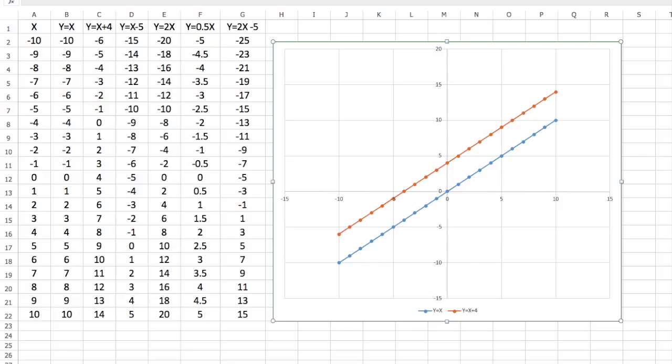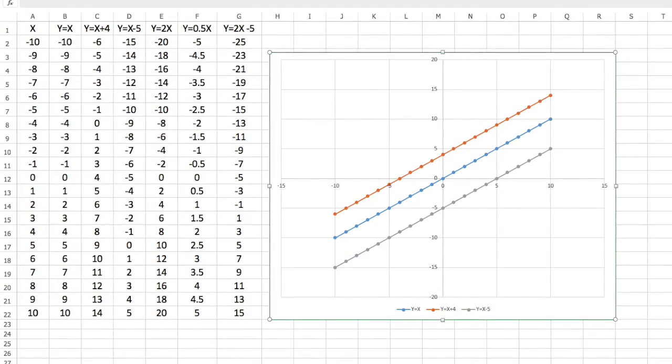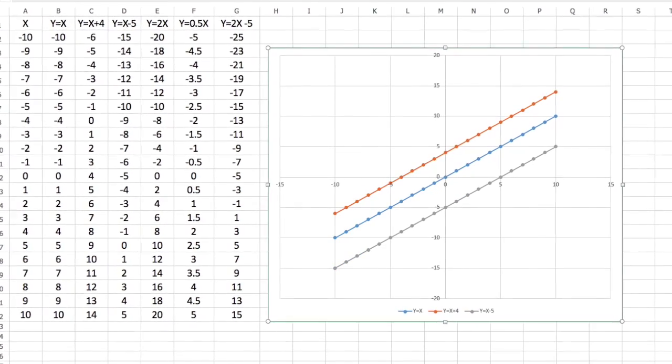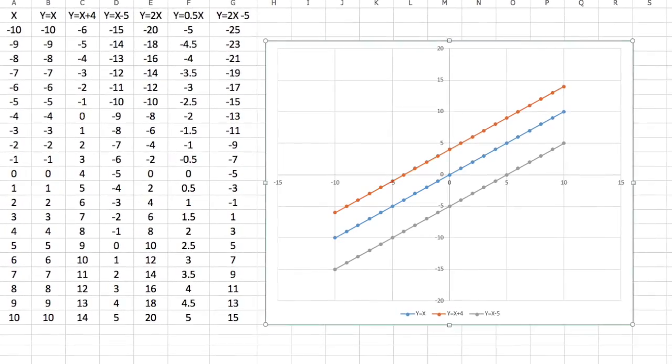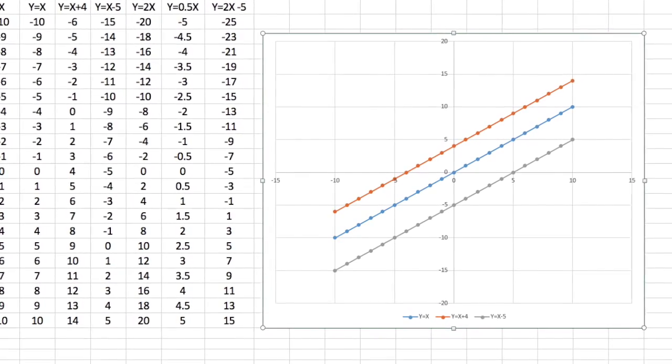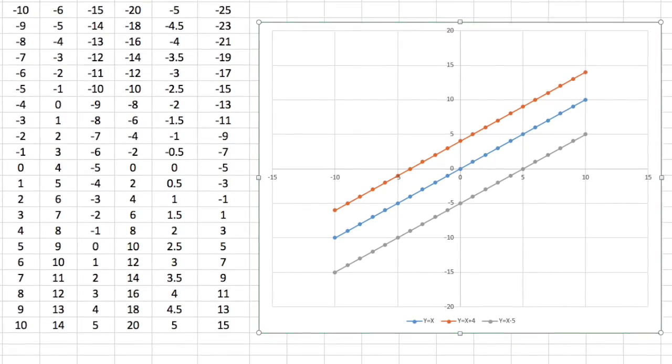Notice that because the horizontal and vertical scales are different, the line is not at 45 degrees. The third line here in grey is of the equation y equals x minus 5, so the line is dropped by 5 units. Again, the gradient or slope is identical.